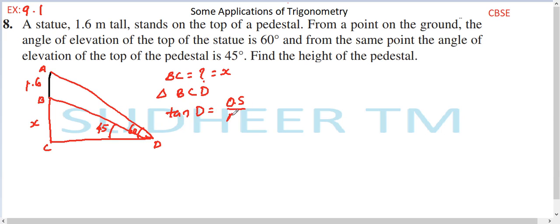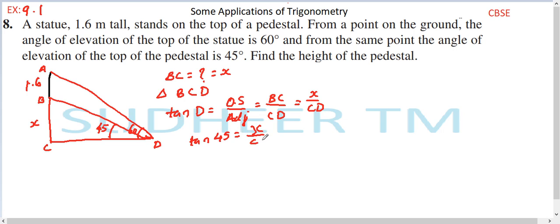In triangle BCD with the 45 degree angle, BC is the opposite side and CD is the adjacent side. So tan D equals opposite over adjacent, which is BC over CD, giving tan 45 equals x over CD. Since tan 45 equals 1, we get CD equals x. This is equation number one.